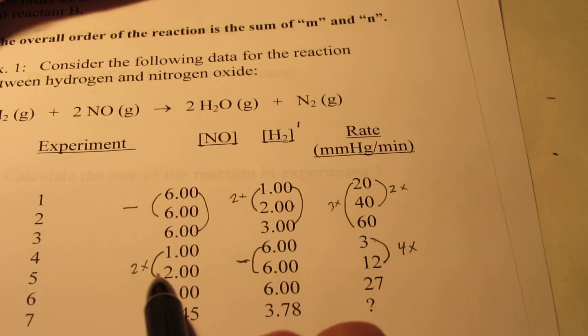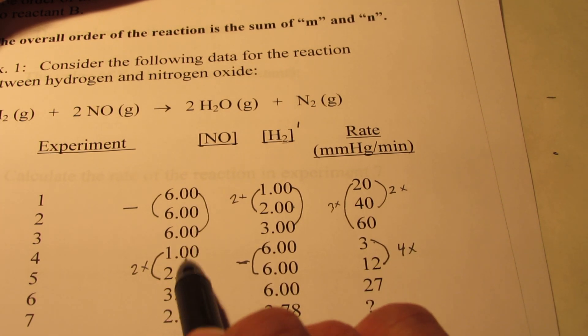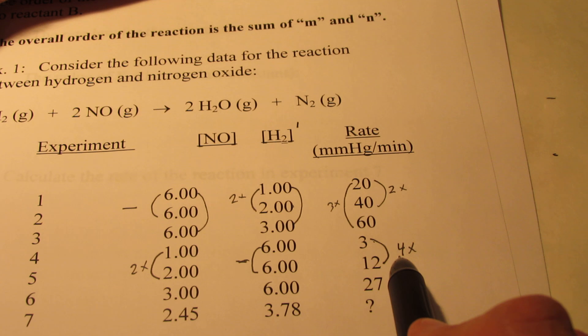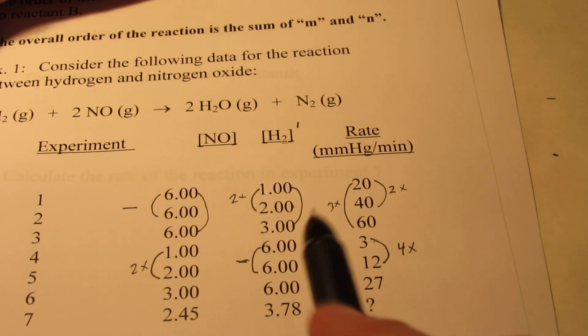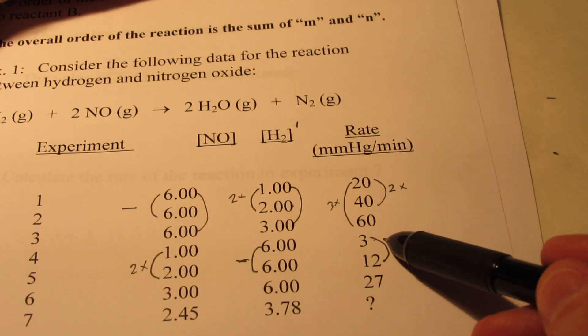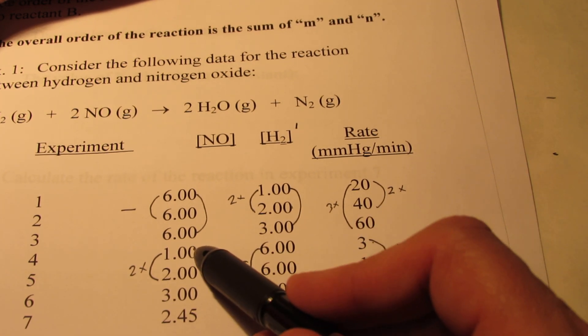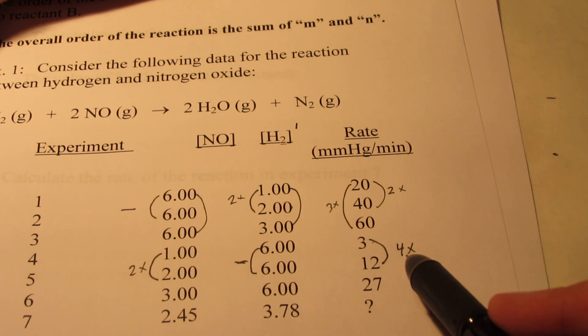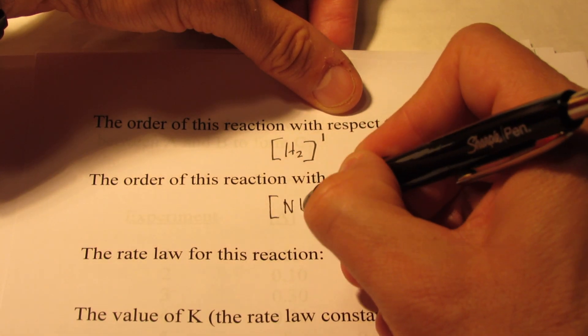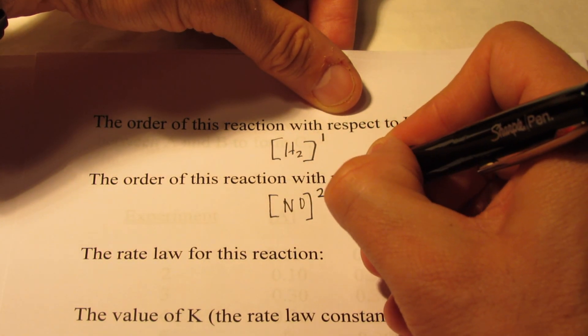Remember, a 0 order was when I doubled or tripled this, it had no effect on this. First order, when I doubled this, this would double. That's not what happened. Second order, though, if I doubled this, I square that, it would four-tuple my rate. So I claim the order with respect to NO is second order.